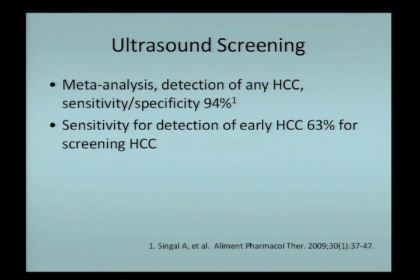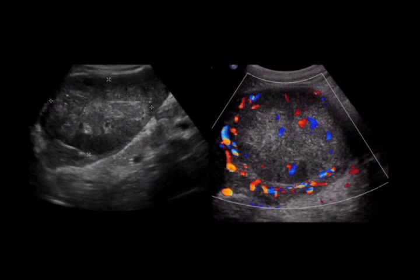How good is ultrasound? Based on the literature, sensitivity and specificity for detecting any-size HCC are in the low 90s, though sensitivity for early tumors is somewhat lower. Both numbers are probably optimistic—in clinical experience it likely doesn't fare this well in practice. Typical ultrasound images of HCC show a large, well-circumscribed tumor with color Doppler demonstrating vascularity, suggesting vascularized solid tissue that is highly suspicious in this patient population.